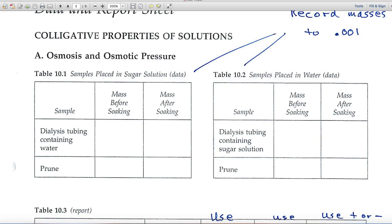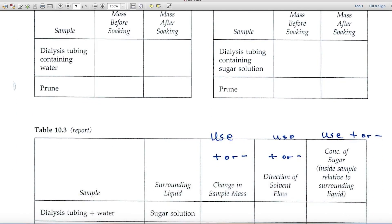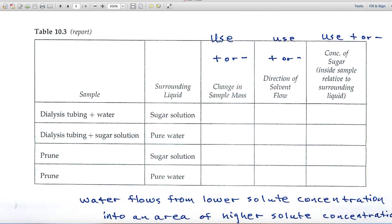Osmosis, as you know, is the flow of solvent, usually water, across a membrane, and you'll be determining some masses before soaking and after soaking, and you can read those photographs to the thousandth, so be sure and record those values to that accuracy.